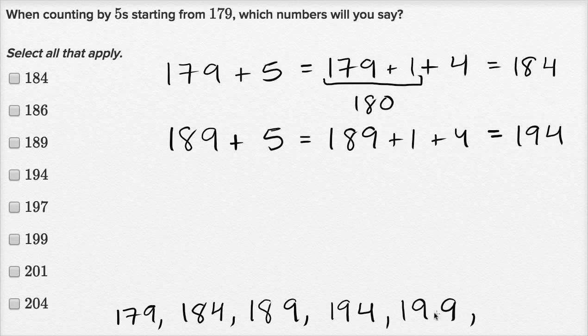Now if you add 5 again, let's see, this would be 199 plus 5 is the same thing as 199 plus 1 plus 4. So 199 plus 1 is 200, plus 4 is 204. So let's see which of these numbers we see so far.